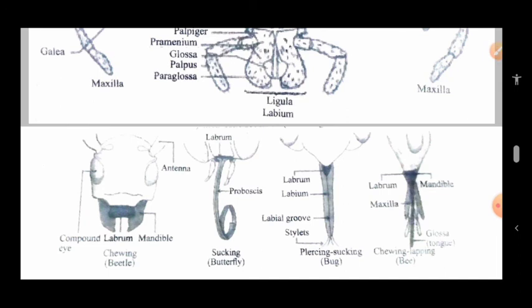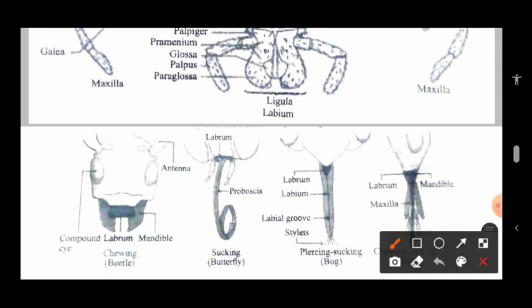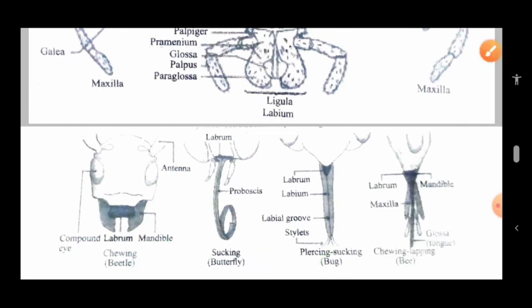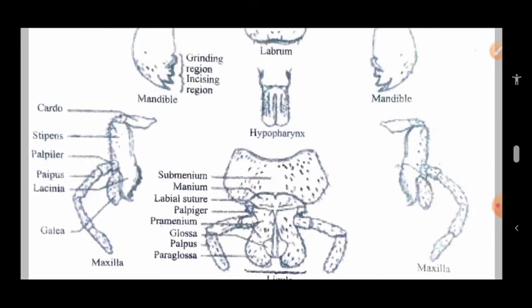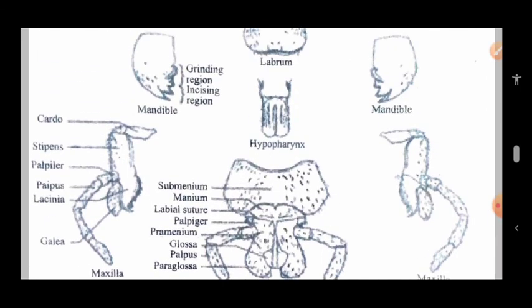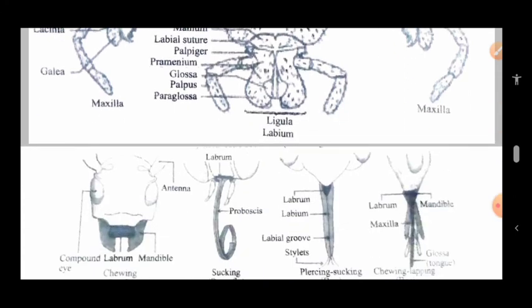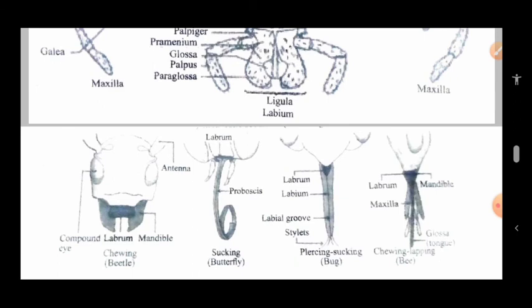These various types of mouthparts are present in the beetle, butterfly, bug, and bee. Dear students, today we have seen what is the actual or typical structure of mouthparts and what are the different types of mouthparts which are present in specific insects. Do you understand?